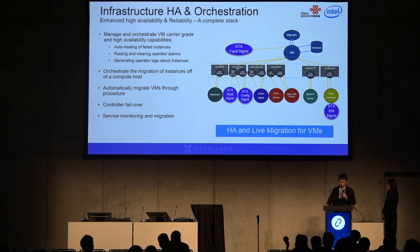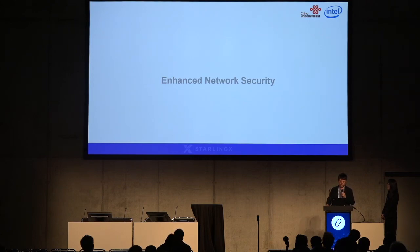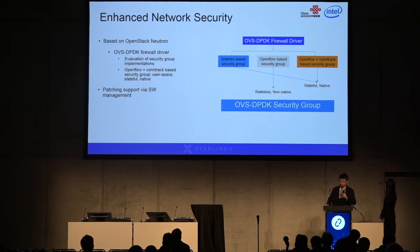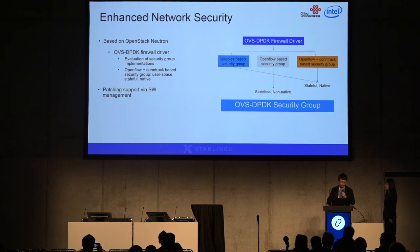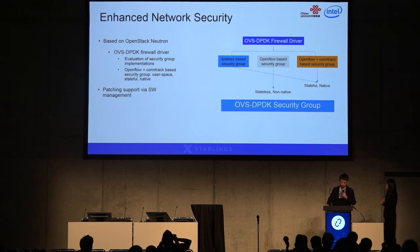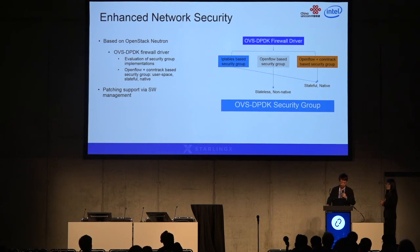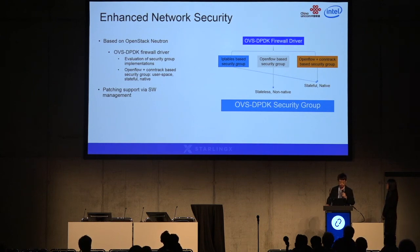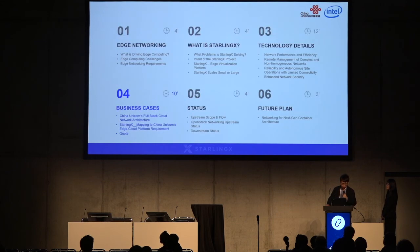The last edge requirement StarlingX is trying to fill is enhanced network security. There are quite a lot of firewall driver solutions currently available in the upstream. StarlingX enhances OpenStack Neutron to select the OVS-DPDK firewall driver. Some solutions are stateful, some stateless, some native, some non-native. Currently StarlingX is using an OpenFlow plus connection-tracking based OVS-DPDK driver — this is a totally user-space, stateful, and native solution. Apart from this, StarlingX is providing patching support via software management, which allows you to update your software versions to mitigate some network vulnerabilities.